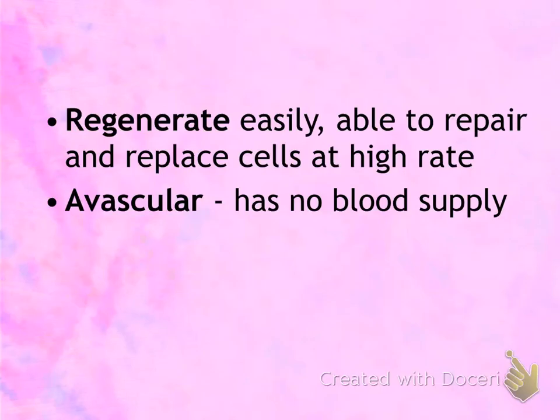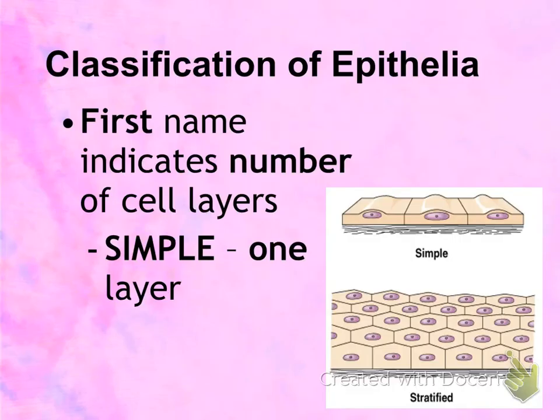Two other characteristics of epithelium: they regenerate easily. Think of your skin — it is a type of epithelium, and you are constantly shedding skin cells while making more to replace them. Also, epithelial tissue is avascular, meaning it has no blood supply. This is why when you get a scratch at the surface of the skin, you don't bleed.